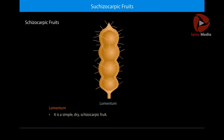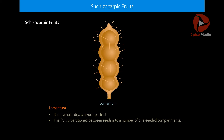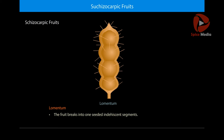Lumentum is a simple dry schizocarpic fruit. The fruit is partitioned between seeds into a number of one-seeded compartments, and the fruit becomes transparent.